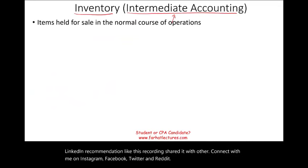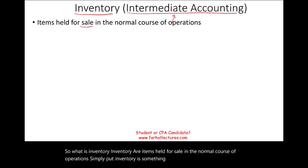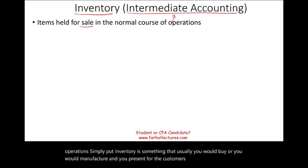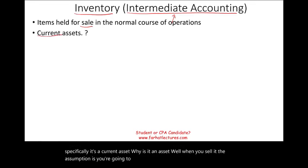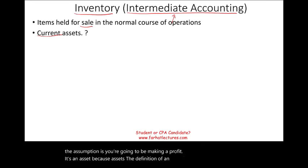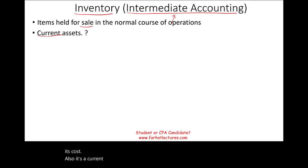So what is inventory? Inventory consists of items held for sale in the normal course of operations. Simply put, inventory is something that you would buy or manufacture and present to customers for sale. It's an asset — specifically, a current asset. It's an asset because assets are defined as something that will provide future benefit, and the assumption is you will sell it at a price higher than its cost. It's a current asset because you expect to sell it in the near future.